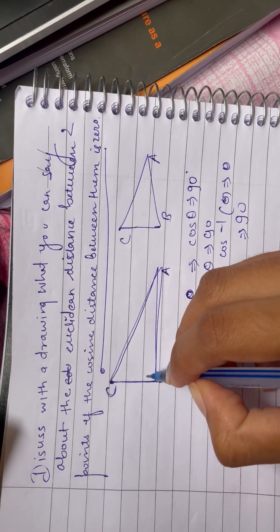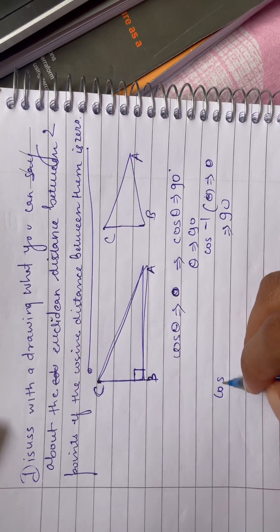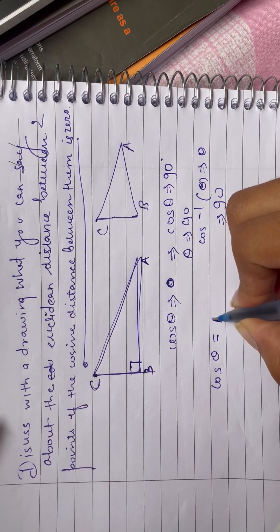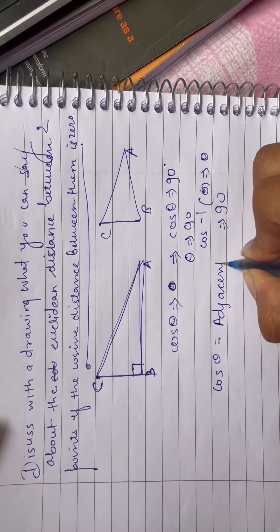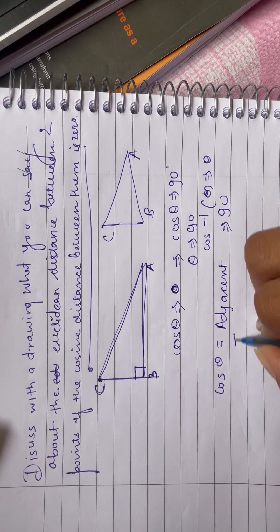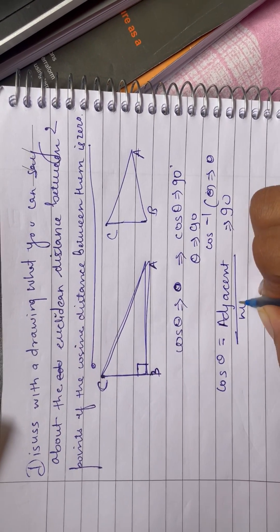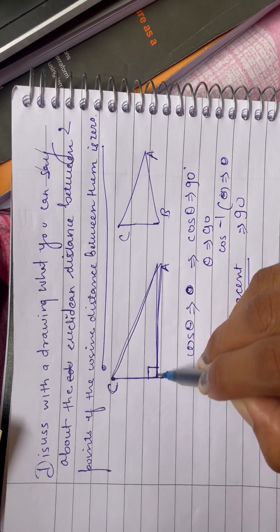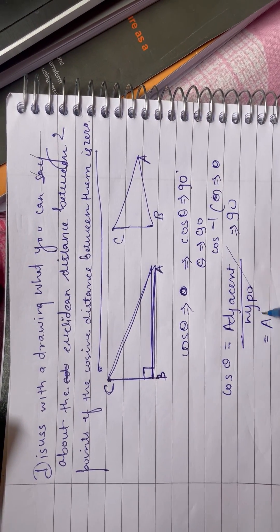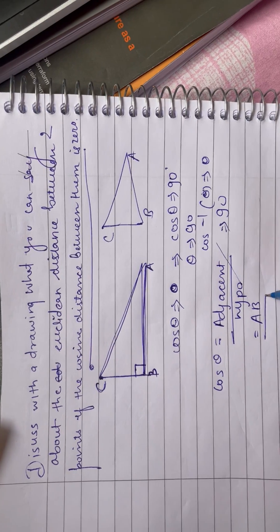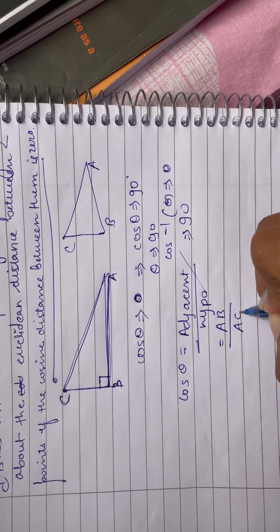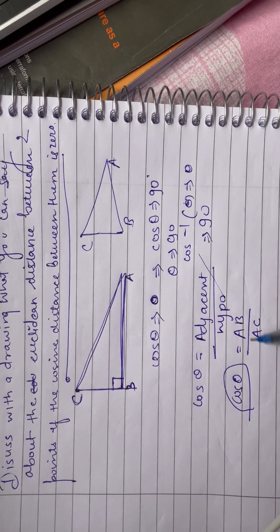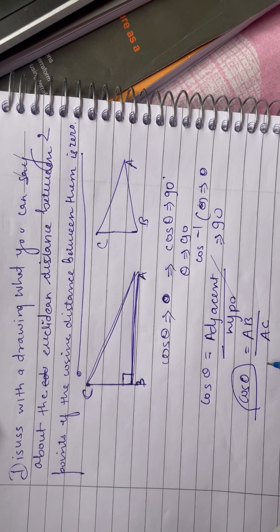So let us consider it as a right angle triangle. As we know, cosine theta equals the adjacent side divided by the hypotenuse. So the adjacent will be AB divided by AC. Since cosine theta is 90 degrees...